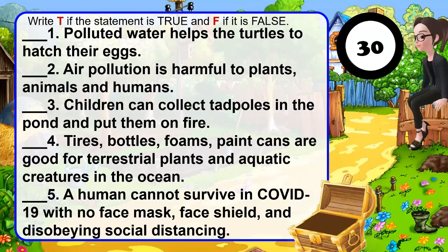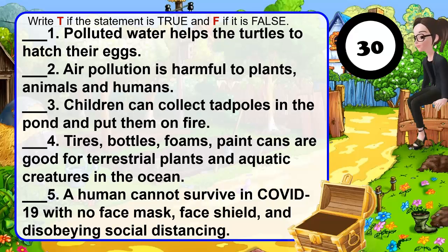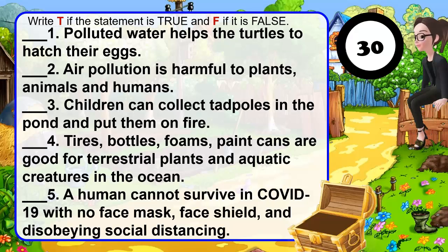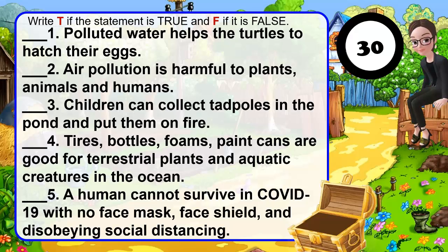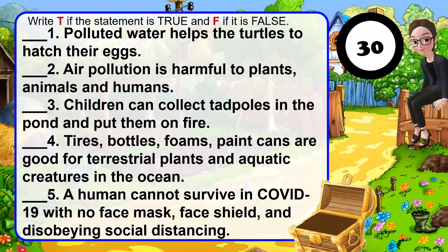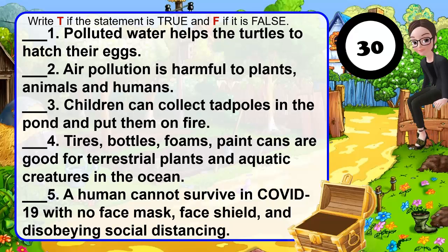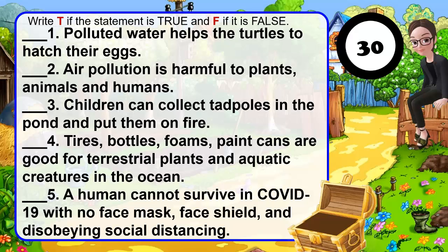1. Polluted water helps the turtles to hatch their eggs. 2. Air pollution is harmful to plants, animals, and humans. 3. Children can collect tadpoles in the pan and put them on fire. 4. Tires, bottles, foams, and paint cans are good for terrestrial plants and aquatic creatures in the ocean. 5. A human cannot survive in COVID-19 with no face mask, face shield, and disobeying social distancing. You have 30 seconds to answer this.